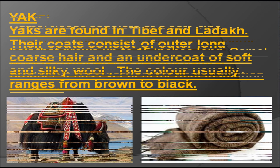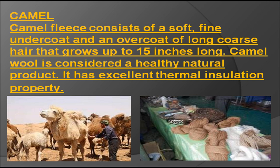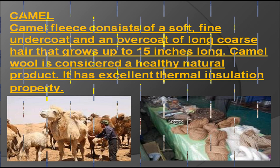Camel: Camel fleece consists of a soft fine undercoat and an overcoat of long coarse hair that grows up to 15 inches long. Camel wool is considered a healthy natural product. It has an excellent thermal insulation property.